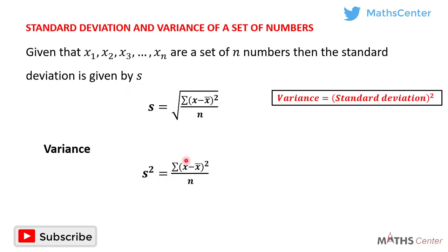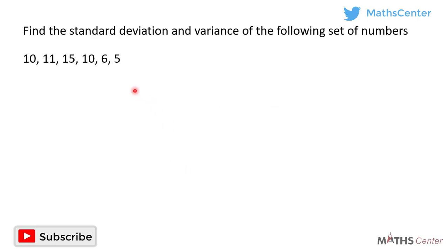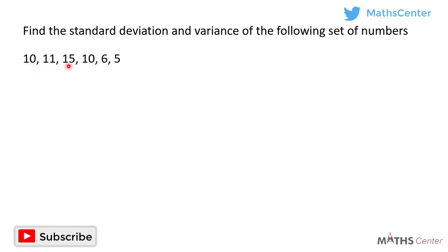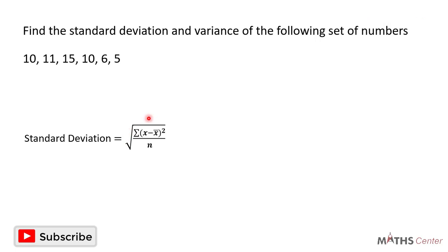Let's apply what we have learned to solve some questions. Find the standard deviation and variance of the following set of numbers: 10, 11, 15, 10, 6, and 5. We have learned that the standard deviation is equal to the square root of sigma (x minus the mean of x) squared divided by n, where n is the number of numbers.